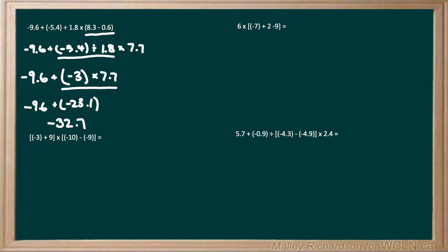Next we have negative 3 plus 9 times negative 10 minus negative 9. We can see that we have two sets of brackets here, so we're going to do everything inside these brackets first. In our first set of brackets we have negative 3 plus 9, which leaves us with positive 6. And then we're going to multiply that by our next set of brackets, where we have negative 10 minus negative 9.